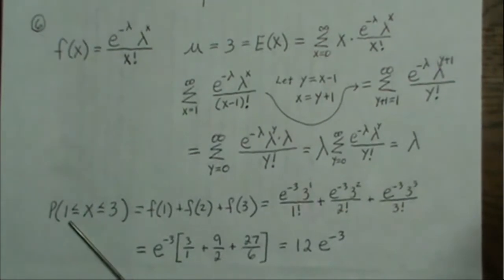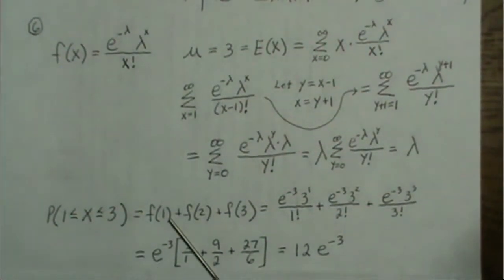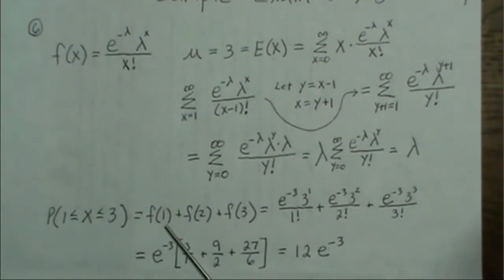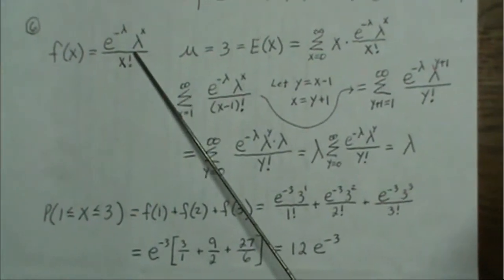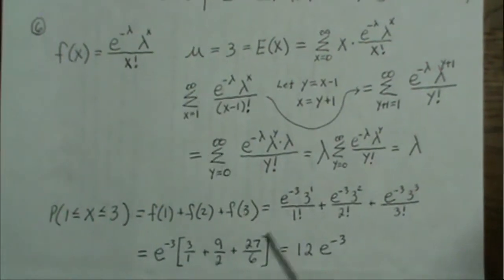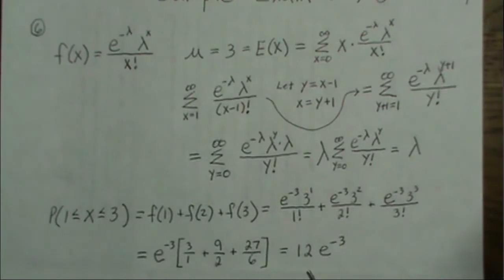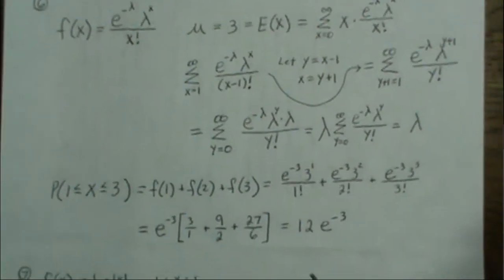The probability that X is between one and three is f(1) + f(2) + f(3), plugging in those values into the Poisson density with lambda equal to three. Solving, we get 12 times e raised to the minus three.